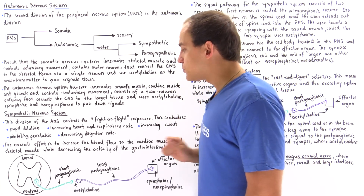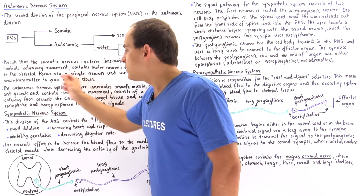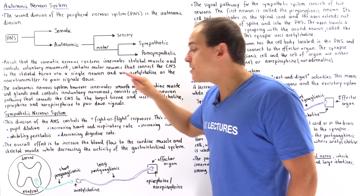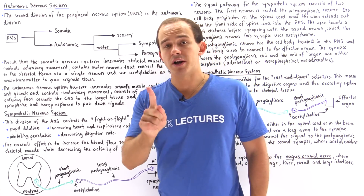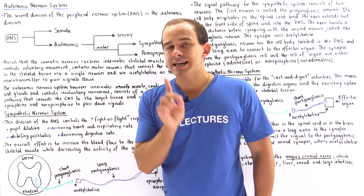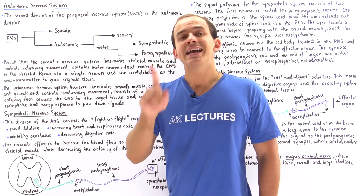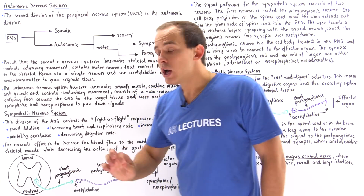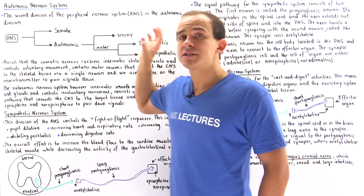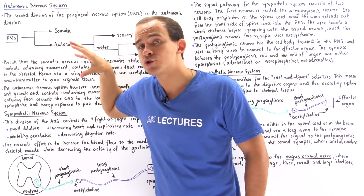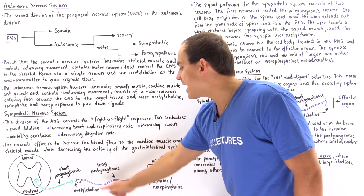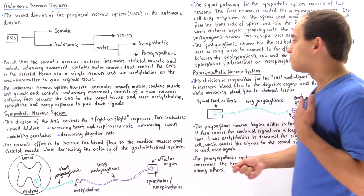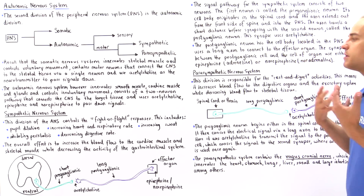There is an exception to this rule. Inside the sympathetic nervous system, we usually have two neurons — a pre and a postganglionic — but there is one exception. The electrical signal carried from the spinal cord to our adrenal medulla is carried by only a single preganglionic neuron, without using the postganglionic neuron. The neurotransmitter in that case is still acetylcholine.